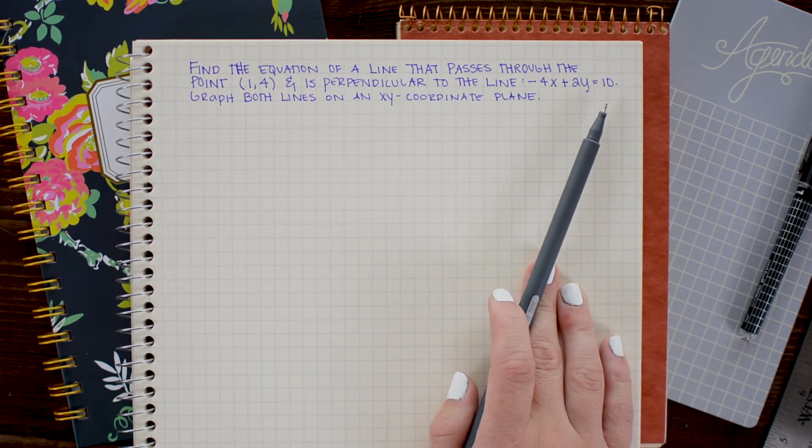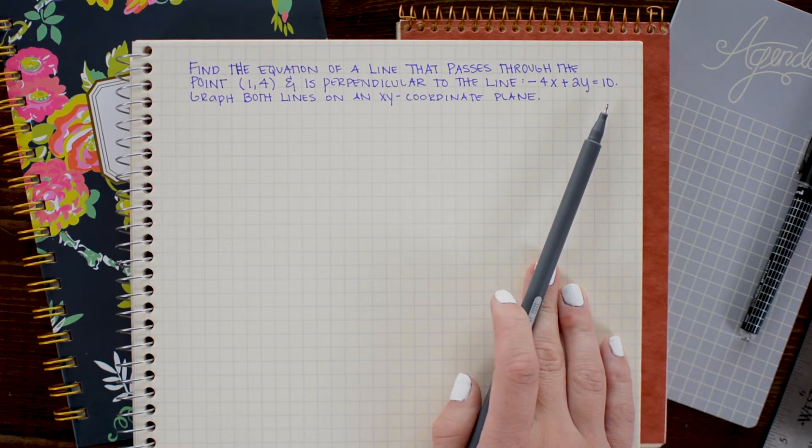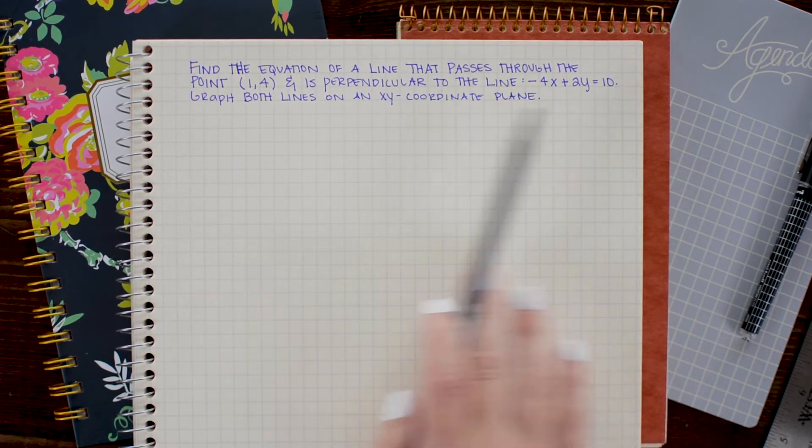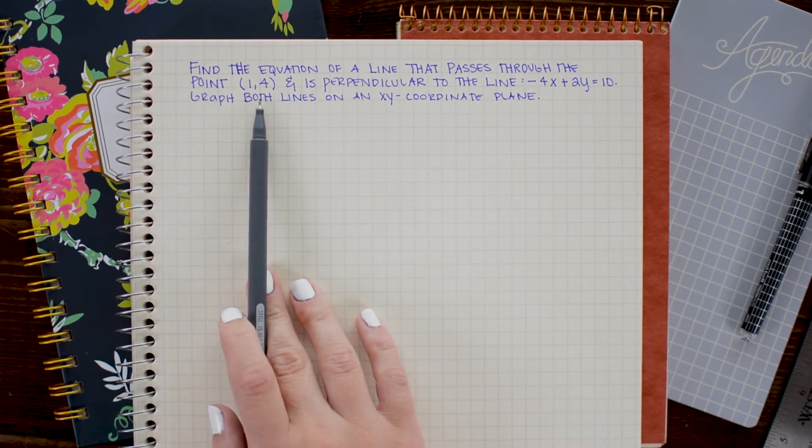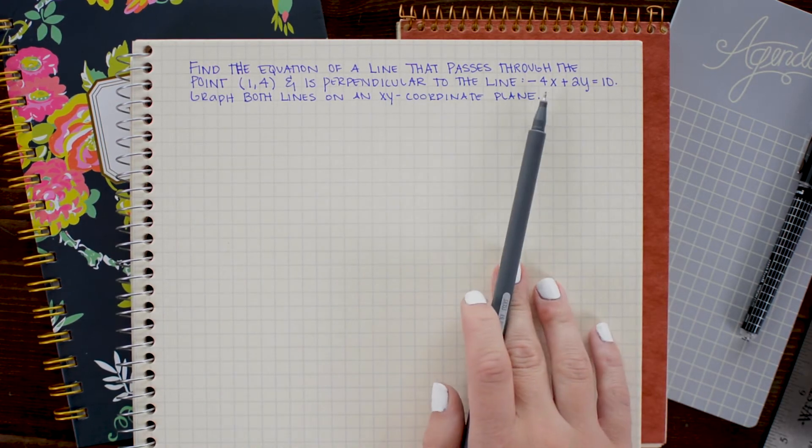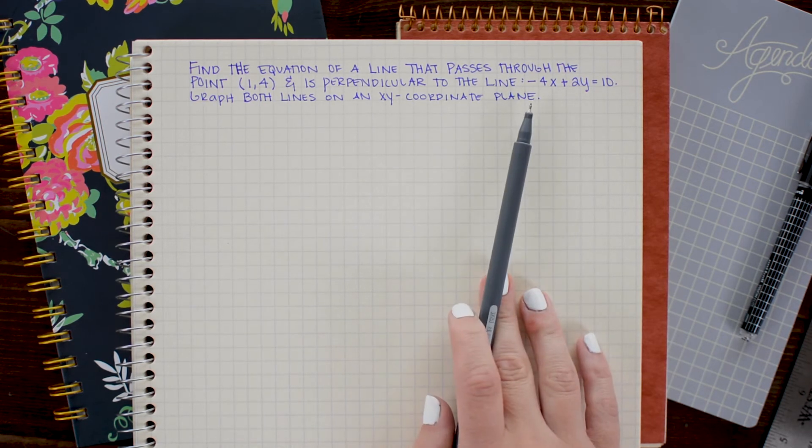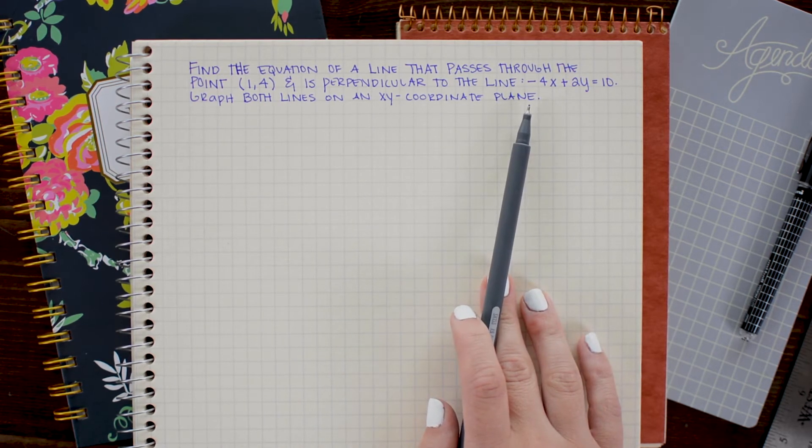Now whenever you're trying to make an equation of a line, you need a couple pieces of information. You either need two points that the line goes through, or you need a point and the slope. So in this problem, we're given the point, and we're told that the line will be perpendicular to this line. So we can use the information here to figure out what the slope of our new line should be.